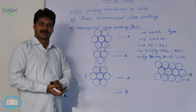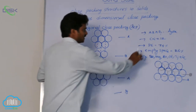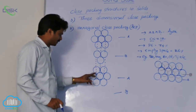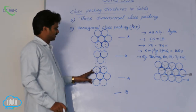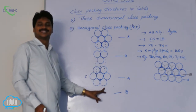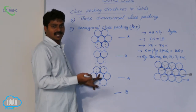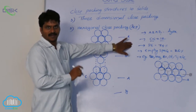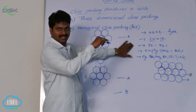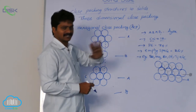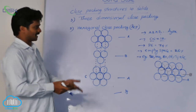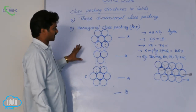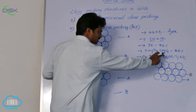To summarize the important points about hexagonal close packing: HCP has an ABAB type layer structure. The coordination number is 12 — 6 from the same layer, 3 from the layer above, and 3 from the layer below. The packing efficiency is 74%, as derived in the previous class, and the empty space is 26%. The metals with HCP structure are beryllium, magnesium, zinc, cadmium, and titanium.